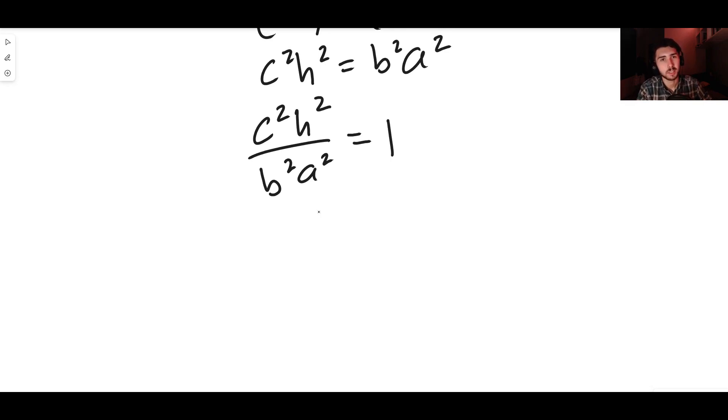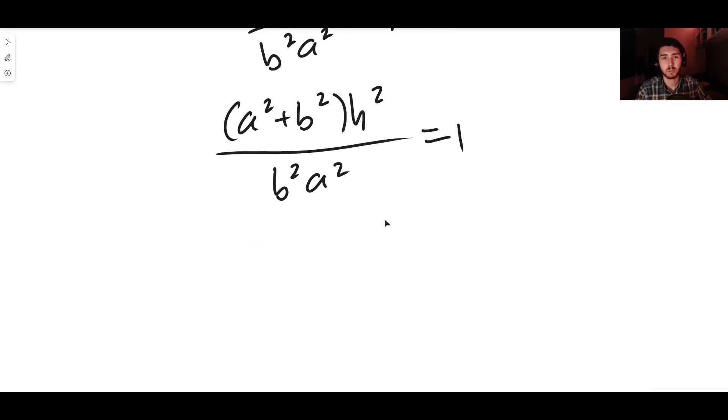Then what I'm going to do is rewrite c squared in its Pythagorean form. c squared of course is just a squared plus b squared because of the normal Pythagorean theorem. So c squared h squared—that's just a squared plus b squared times h squared—divided by b squared a squared gives you one.